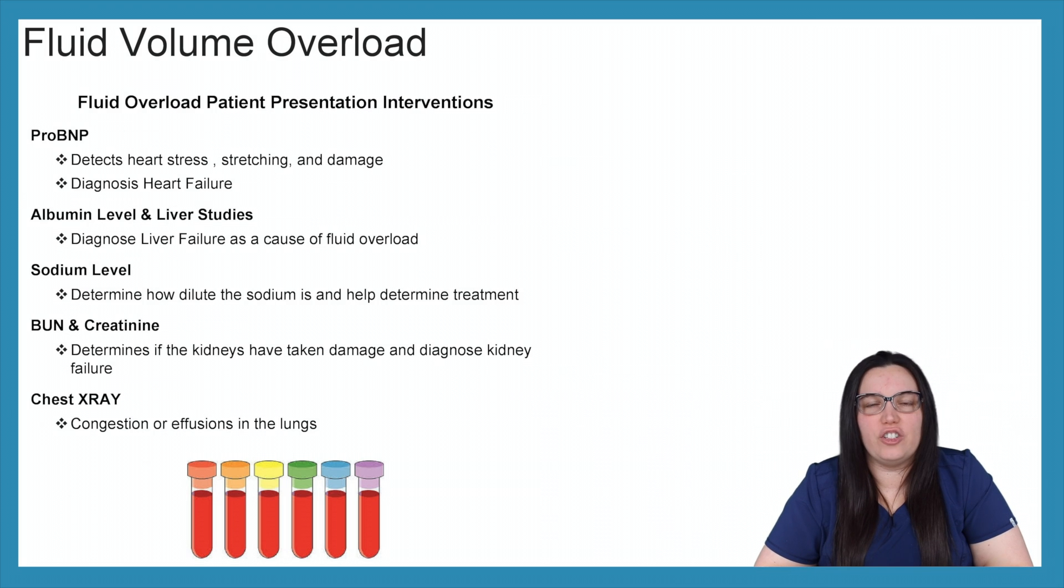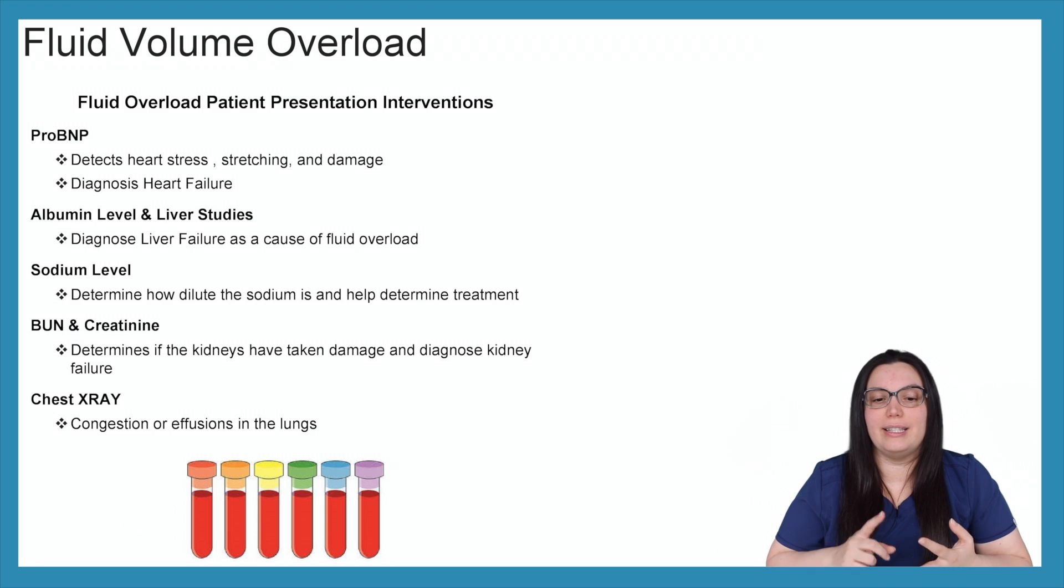So what are we going to do for this patient? What are some things that we're going to look at? Well, we're going to look at our ProBNP because it detects heart stress, stretching, and damage. So we want to make sure that we can diagnose heart failure if that is a cause of our fluid overload. Albumin levels and liver studies to help diagnose liver failure as a cause as well.